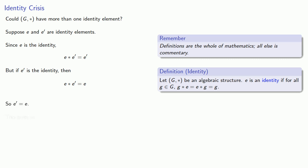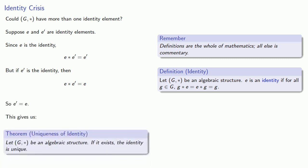And so this gives us the following theorem: Let G-star be an algebraic structure. If it exists, the identity is unique.